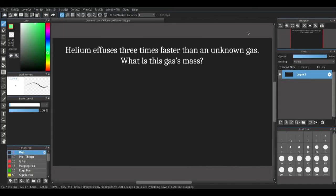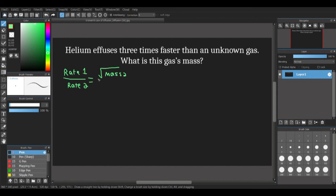For our second question, we are told that helium effuses 3 times faster than an unknown gas. What is this unknown gas's mass? Just like the last question, the first thing we're going to do is write our formula. Rate₁ divided by rate₂ equals the square root of mass₂ divided by the square root of mass₁.